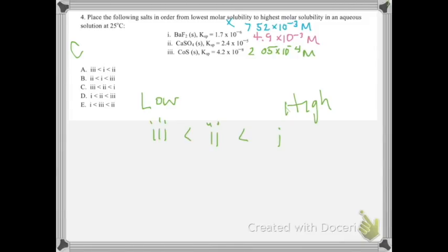You want to be sure to do the ICE tables rather than just ranking by KSP values directly, because you wouldn't get the same answer — that's the result of the different stoichiometries of the salts.